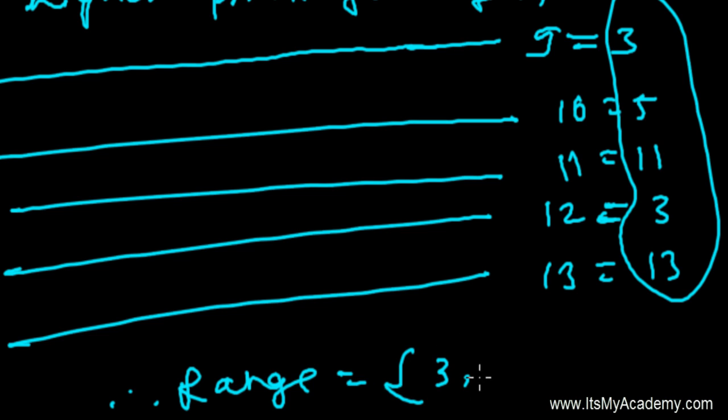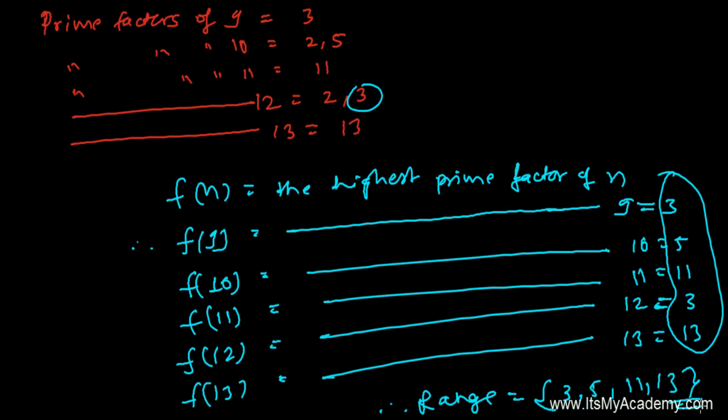So the range is 3, 5, 11, and 13. We don't repeat 3 because in a set we don't repeat elements. So this is our answer.